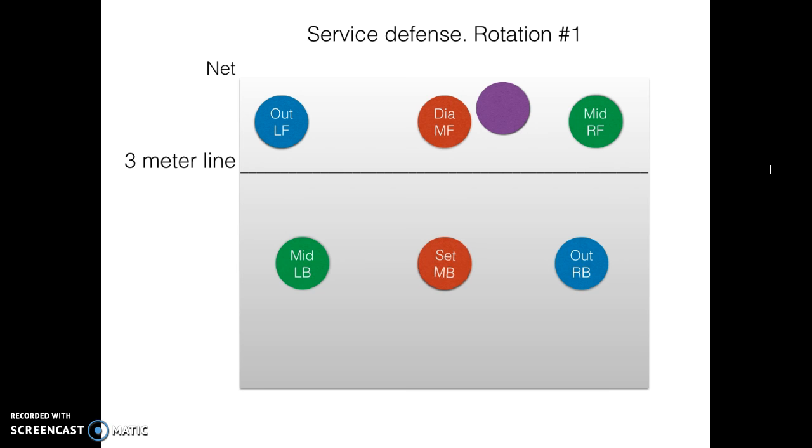So although the setter has to stay behind the diagonal player on mid front, left of the outside player on the right back, and right of the middle player on left back, it doesn't matter for him where the outside player on left front will be.